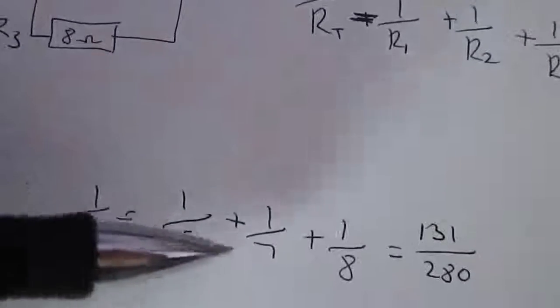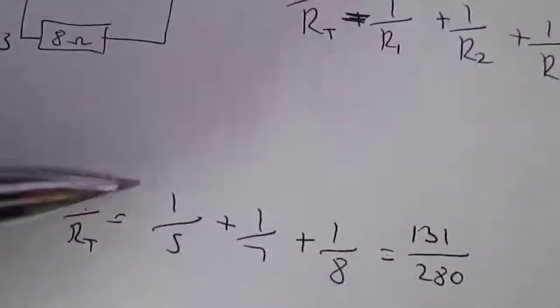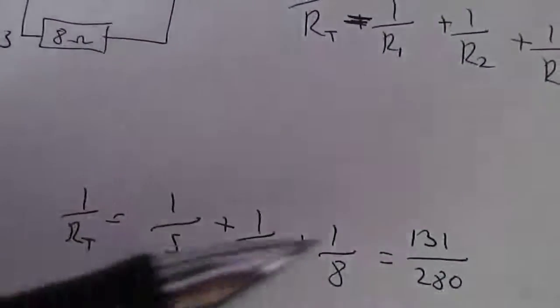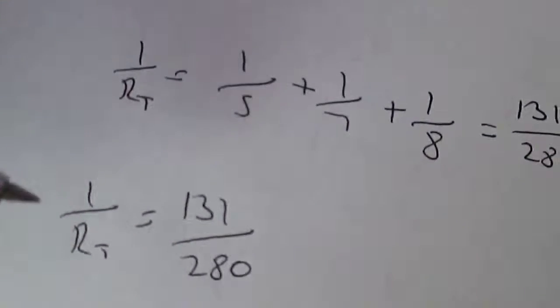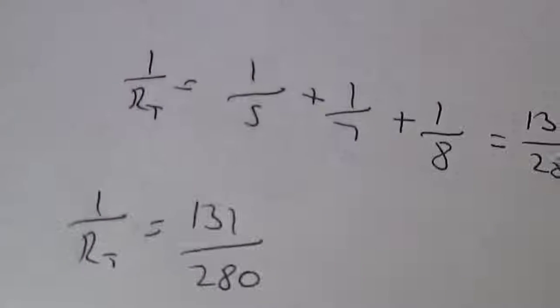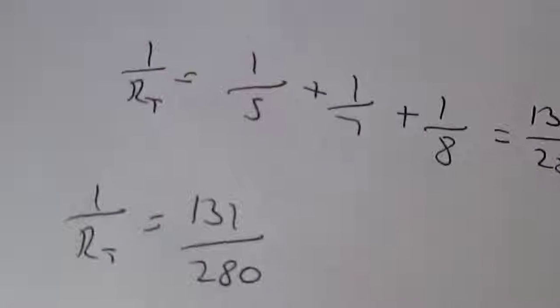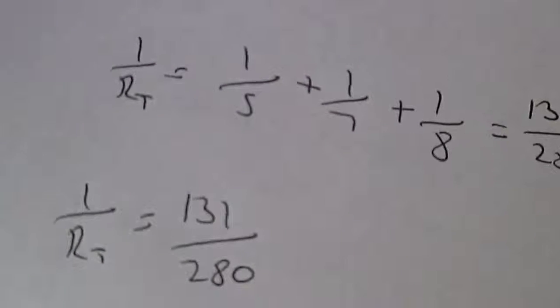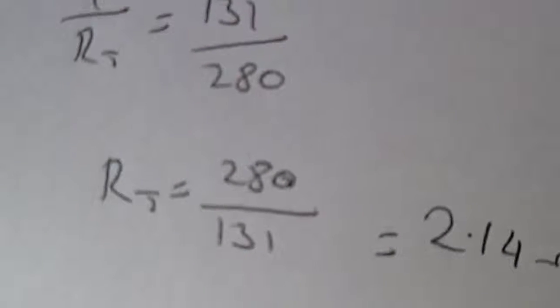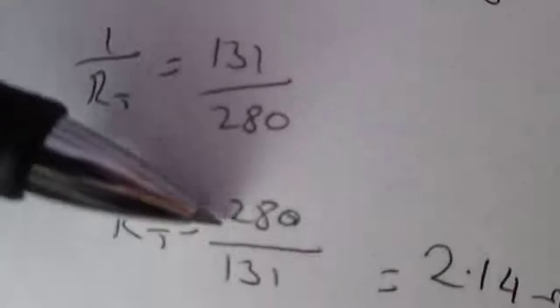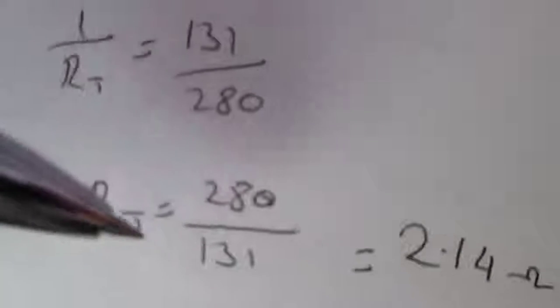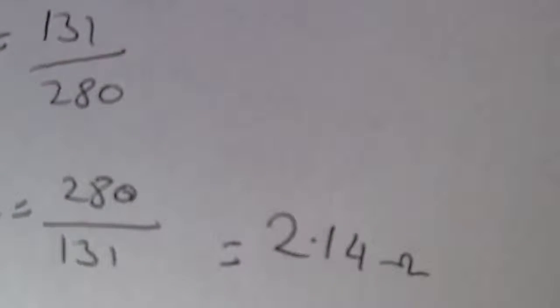So put it in, type it all out, show my working out to get my marks. One over RT equals this. Okay, so we have one over RT, we don't want one over the total resistance, we want the total resistance, so then we have to flip it. So the total resistance equals this flipped upside down, so it's 280 over 131 and you get 2.14 ohms.